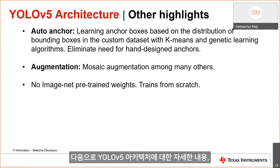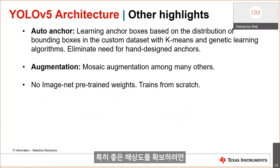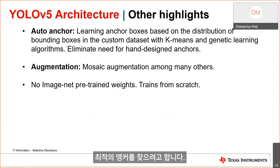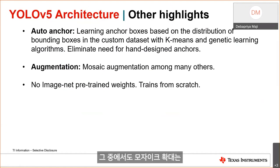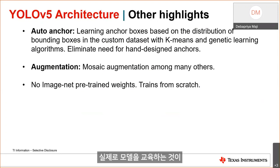Another major innovation in YOLO v5 is auto anchor — you don't have hand-designed anchors. Given a particular dataset and input resolution, the auto anchor algorithm automatically tunes the anchors to the dataset by optimizing the best possible recall through a thousand iterations of a genetic algorithm to find the optimal anchors. YOLO v5 also uses heavy augmentation — most accuracy improvements come from augmentation — with mosaic augmentation being a key YOLO v5 proposal. Additionally, YOLO v5 trains completely from scratch without pre-trained weights, making it simple to train.